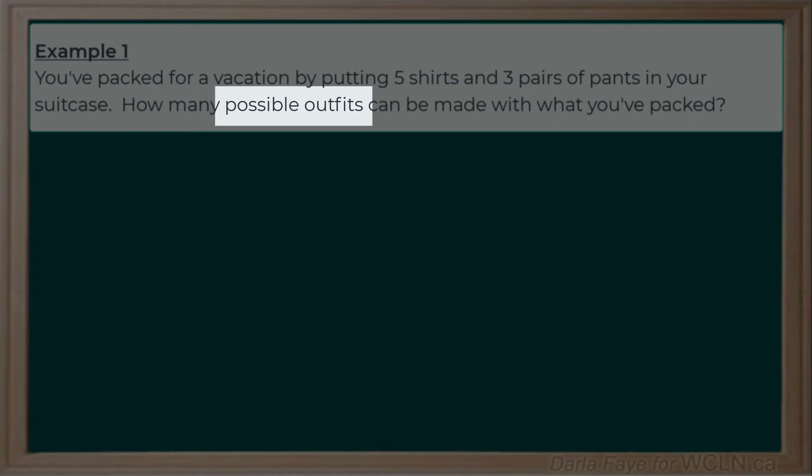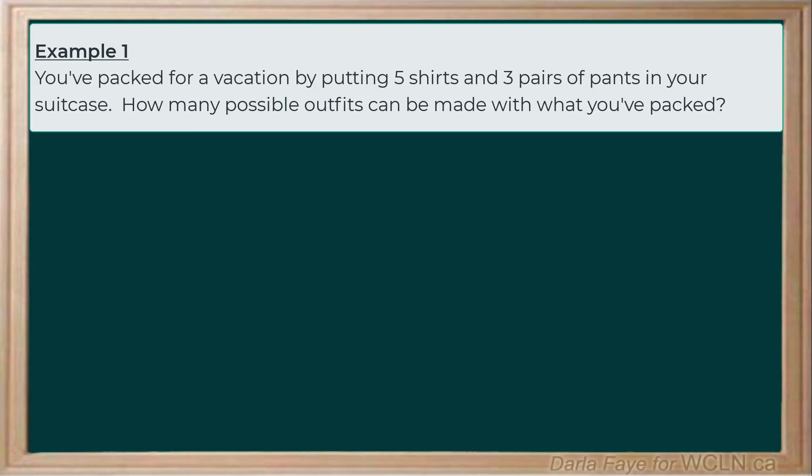However, we understand that to select an outfit, we need to select both a shirt and a pair of pants. When I reframe it like this, I can clearly see that task A and task B are related by that keyword AND. Therefore, we can use the Fundamental Counting Principle to determine the total number of outfits.